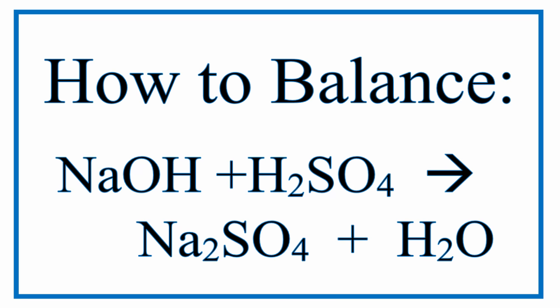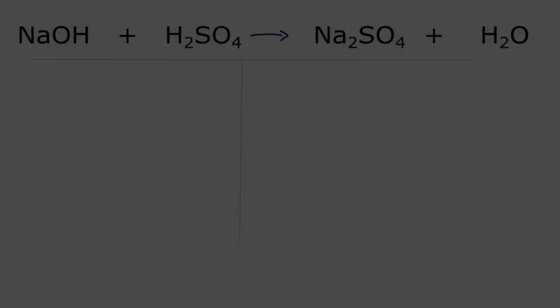To balance this equation, NaOH plus H2SO4 yields Na2SO4 plus H2O. Let's count up the atoms on each side of the equation.